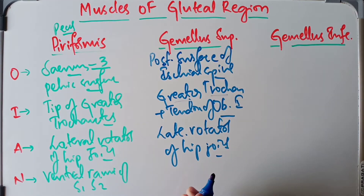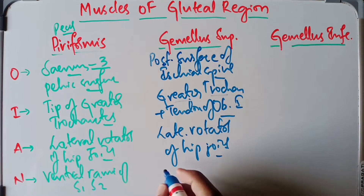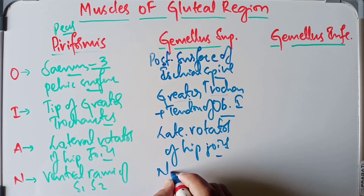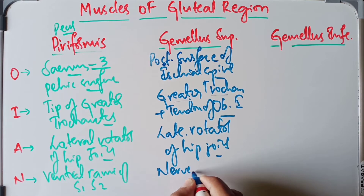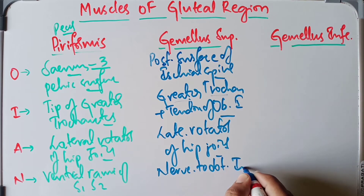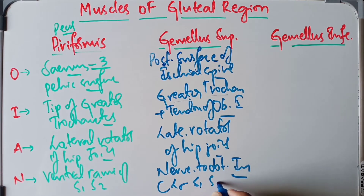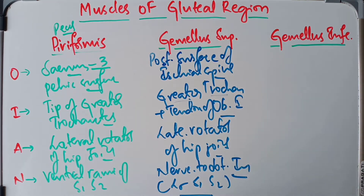The nerve supply of the gemellus superior is by the nerve to obturator internus, which arises from the L5, S1, and S2 spinal segments of the sacral plexus.